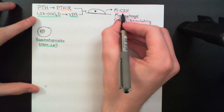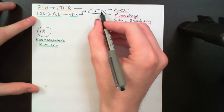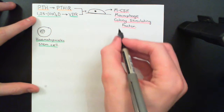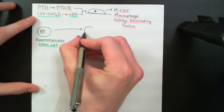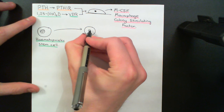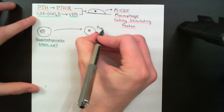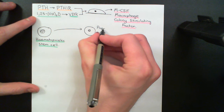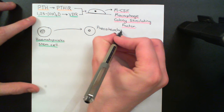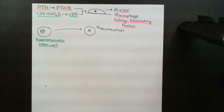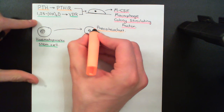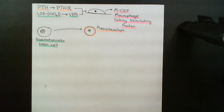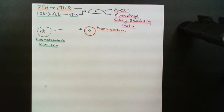So macrophage colony-stimulating factor is what's driving the hematopoietic stem cell system to produce more pre-osteoclasts. These pre-osteoclasts — more normal cells with a single nucleus — will arrive and fuse together to make osteoclasts on the surface of the bone.